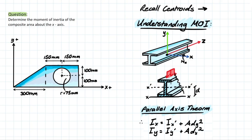I-beams are very useful in construction because you have your flange — the section on the top and bottom — which is very spread out from where that x-axis actually is. And it saves on material by not needing to use too much thickness in the web.